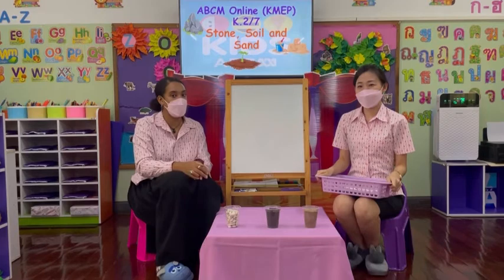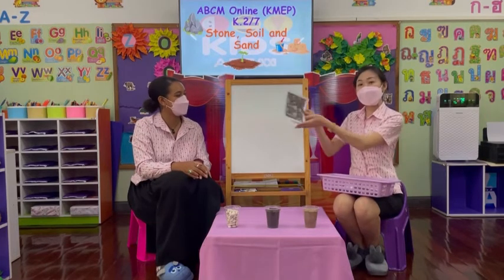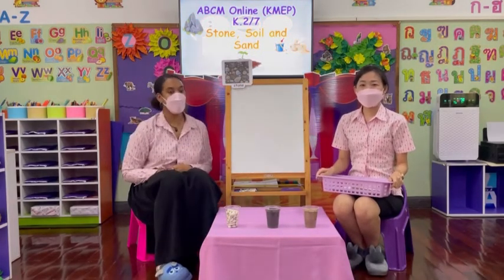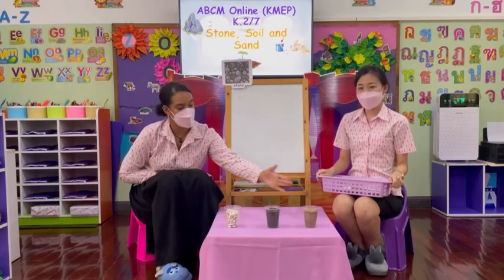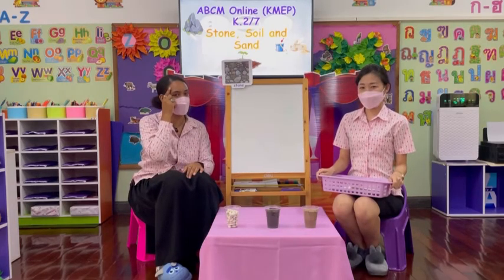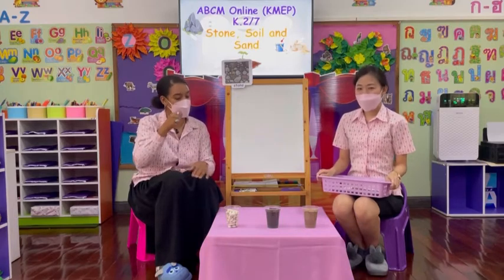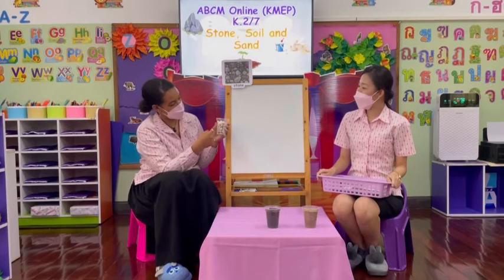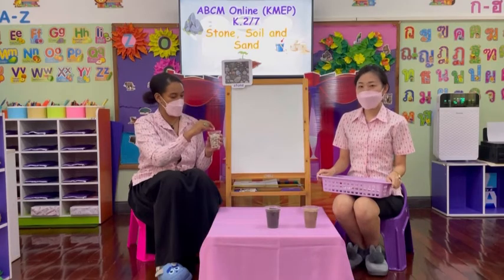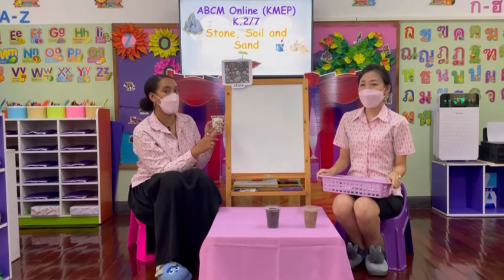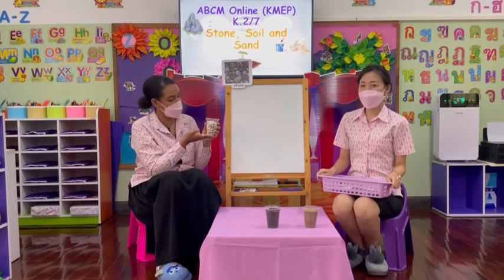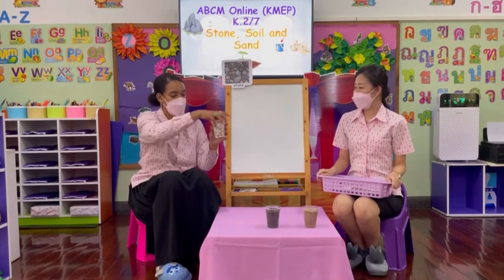The first thing we are going to be learning about today is stone! Okay, so here we have three cups. Can you guess which one could be the stone? That is it — good job! It is cup number one. Here we have a cup full of stones. The stones are big and white, but we can get stones in many different colours. Stones can be heavy when we have lots of them put together.